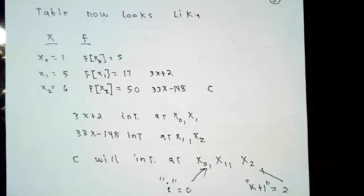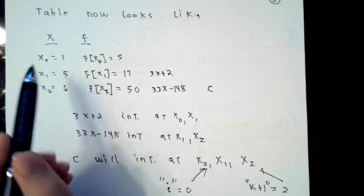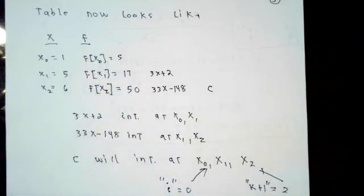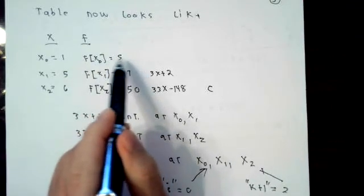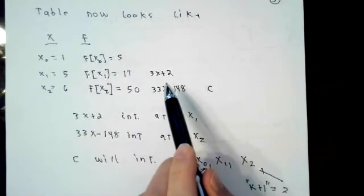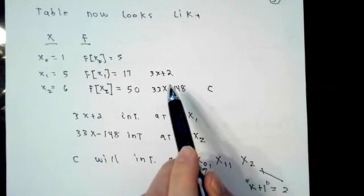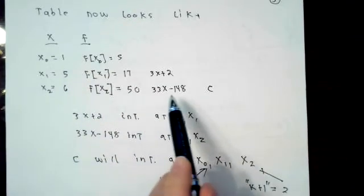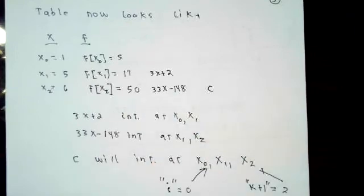Writing down our table with the things we know: we have the x values, the corresponding function values — which are polynomials of degree zero that interpolate the function at single points. We combined x0 and x1 information to find 3x + 2, the polynomial of degree one or less interpolating at x0 and x1. Using our r formula again, the interpolating polynomial at x1 and x2 is 33x minus 148.